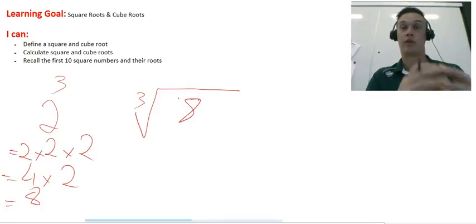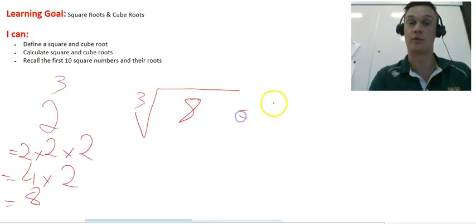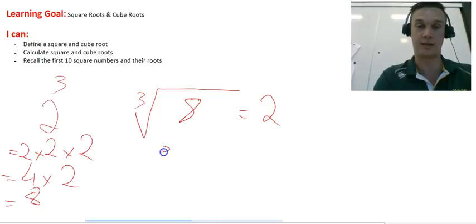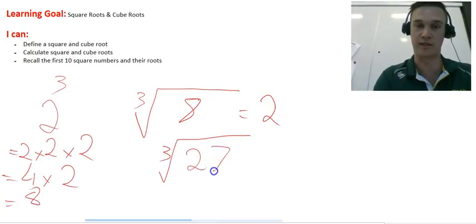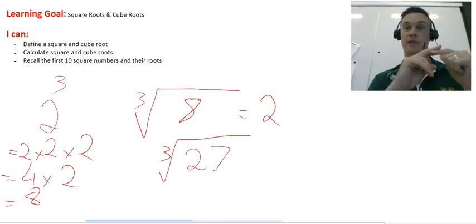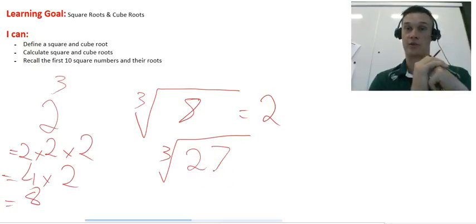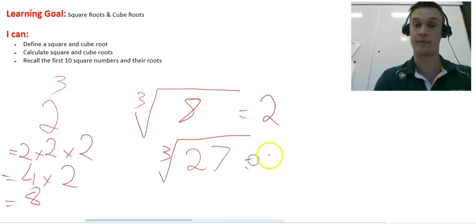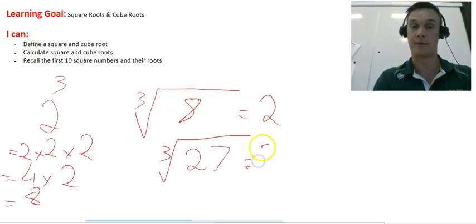So the cube root of 8 is going to equal 2. I'll give you another example. Let's put in the cube root of 27. So a number times itself 3 times is going to equal 27. I know that 3 times 3 equals 9, and 9 times 3 equals 27. So the answer will be 3.